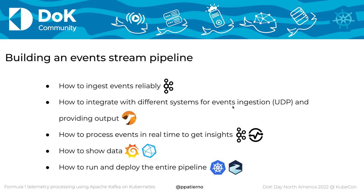What we are going to cover during this session is how to build an event streams pipeline and what challenges you face. The first problem is always about ingesting events reliably — you have a source where your data is coming from, and you want to ingest all this data with high throughput, low latency, without losing events. Apache Kafka is the most used and important data streaming platform for that purpose. You also want to integrate different systems, since the source and destination of your pipeline may not speak the Kafka protocol. In this example, data are coming from UDP and you want to put them in Kafka, so the simpler solution is using the Apache Camel integration framework.